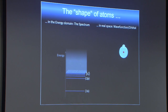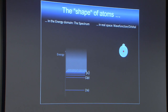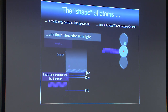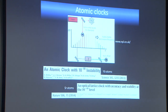The shape of atoms — it's very simple. In the energy domain it's the spectrum, giving basically the spectral shape on the energy landscape, and of course there is the real space structural shape: orbitals. You can let them interact with light, absorb a single photon and promote a system from the ground state to an excited state, also into the continuum.